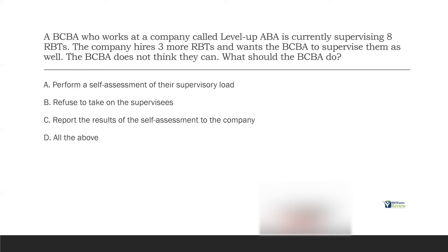Point to the ethical code. Remember, we have to abide by the ethical code, which isn't always easy, but it is our guiding code that as BCBAs we have promised to live up to. So: self-assessment, report those results, and then continue to refuse to take on the supervisees if you're not capable. So what should the BCBA do? It's D — all of the above. This is straight from the ethical code.